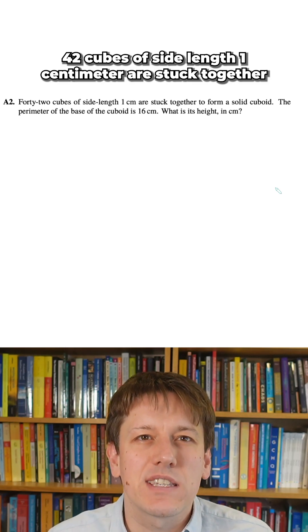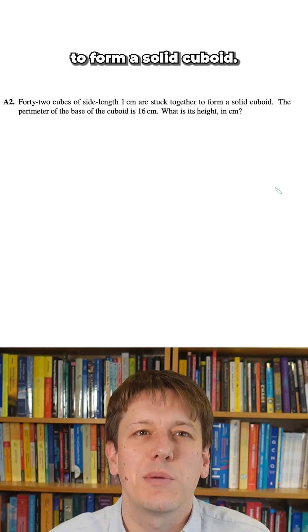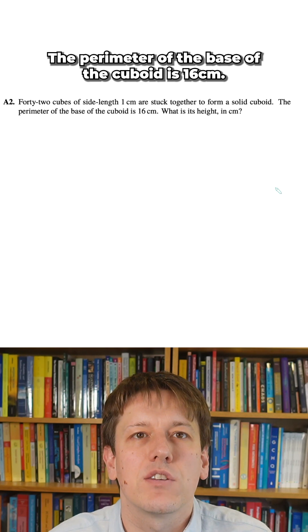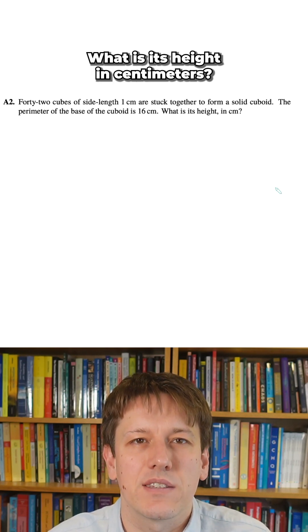42 cubes of side length 1cm are stuck together to form a solid cuboid. The perimeter of the base of the cuboid is 16cm. What is its height in centimeters?